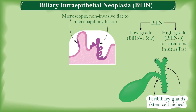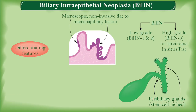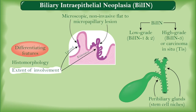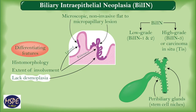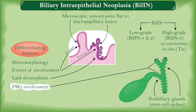Peribiliary glands are located in the wall of large bile ducts, serving as stem cell niches for biliary epithelium. Differentiating points in this context are histomorphology, extent of mucosal involvement that can be limited or extensive, absence of desmoplastic stroma indicating non-invasive nature, peribiliary gland involvement, Ki-67 proliferation index, and immunohistochemistry including P53, S100, IMP3, etc.